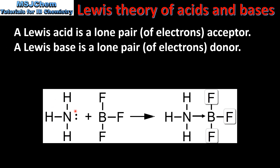Here we have the reaction of NH3, which is ammonia, and BF3, which is boron trifluoride. NH3 has a lone pair of electrons, and boron trifluoride has an incomplete octet, which means it only has 6 electrons in its valence shell. NH3 is a Lewis base because it's able to donate the lone pair of electrons to BF3, which is a Lewis acid.